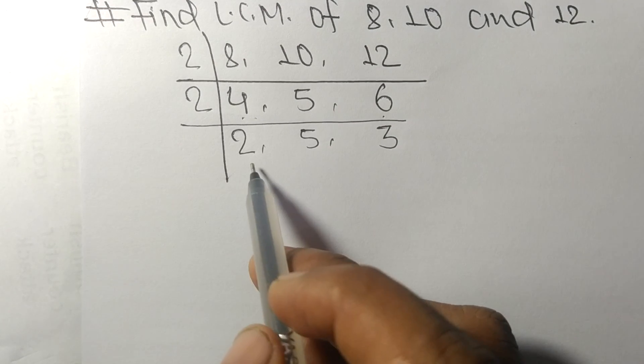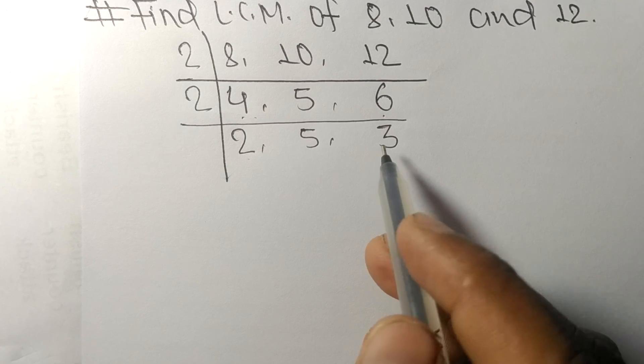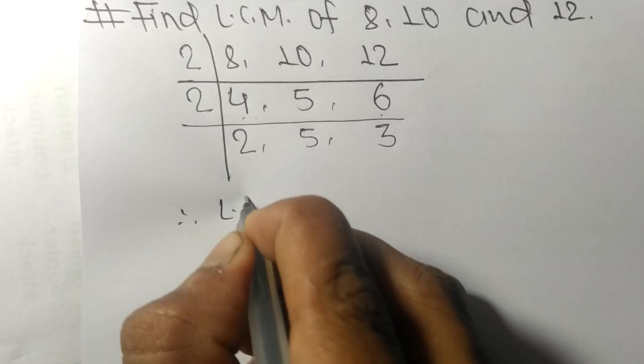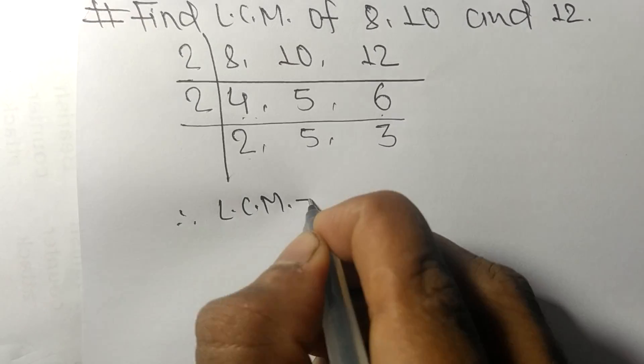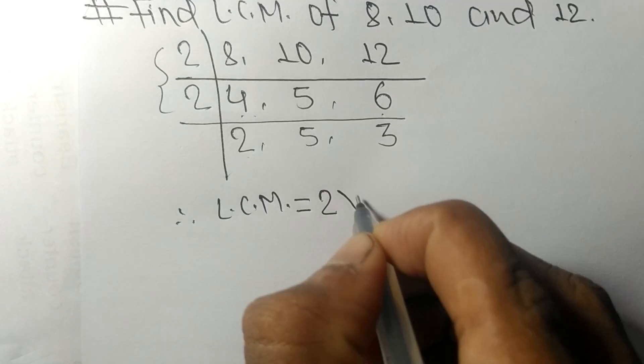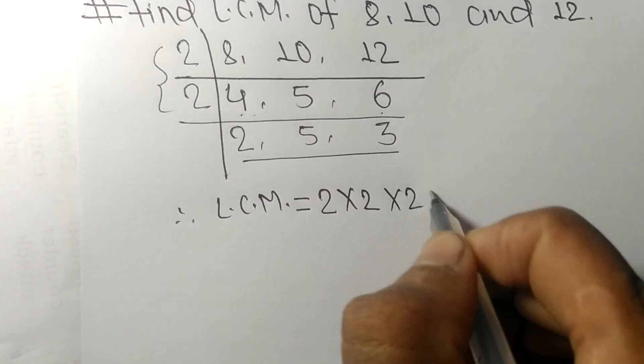So now we got 2, 5 and 3 which are not exactly divisible by the same number. Therefore, its LCM is equal to, from this side it is 2 and 2, from this side it is 2, 5 and 3.